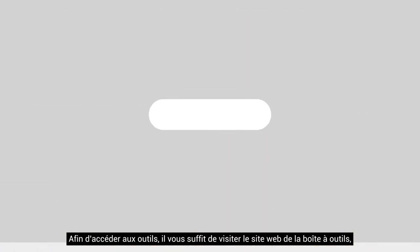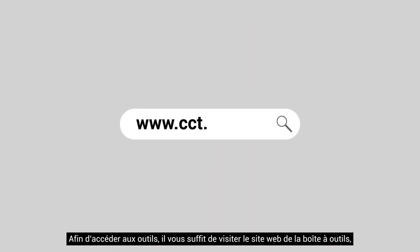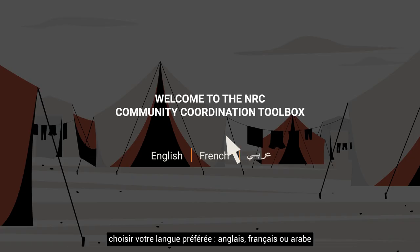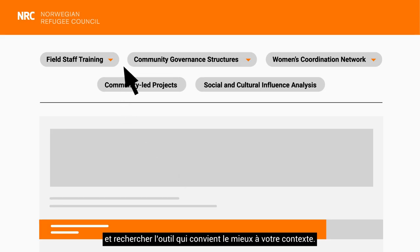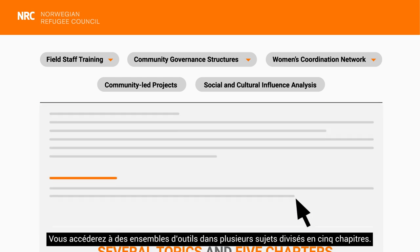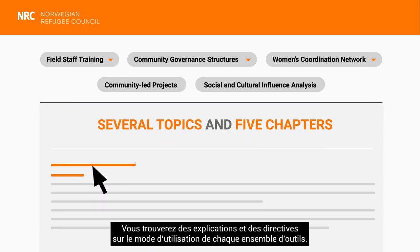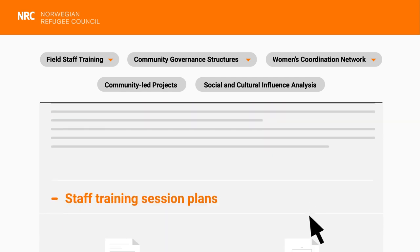To access the tools, all you have to do is visit the Toolbox website, choose your preferred language — English, French or Arabic — and search for the tools that best suit your context. You'll access tool sets in several topics divided into five chapters, and find explanations and guidance on how to use each set of tools.